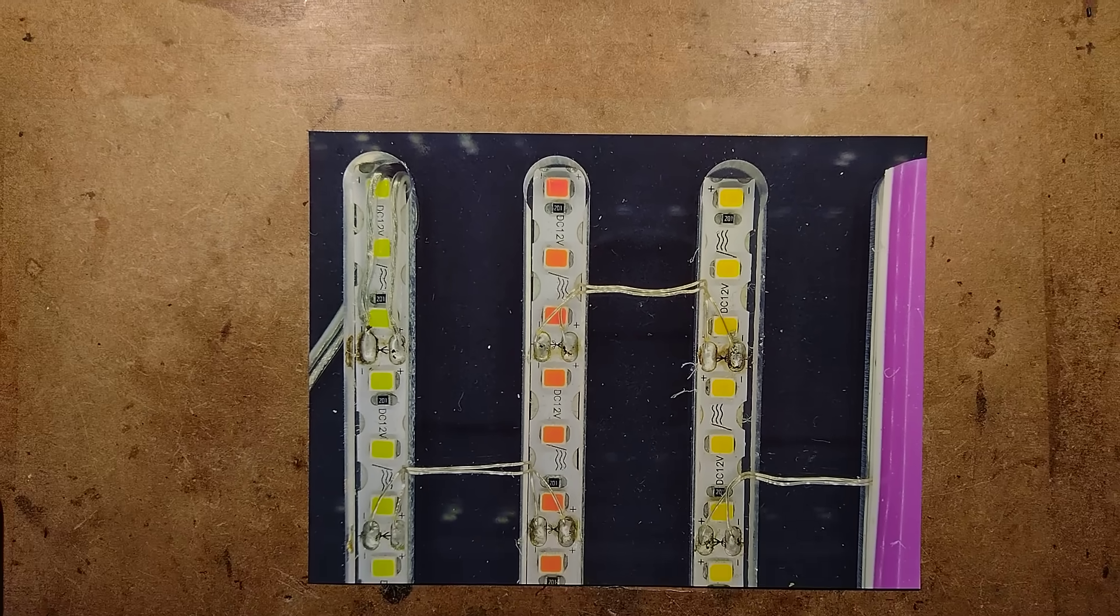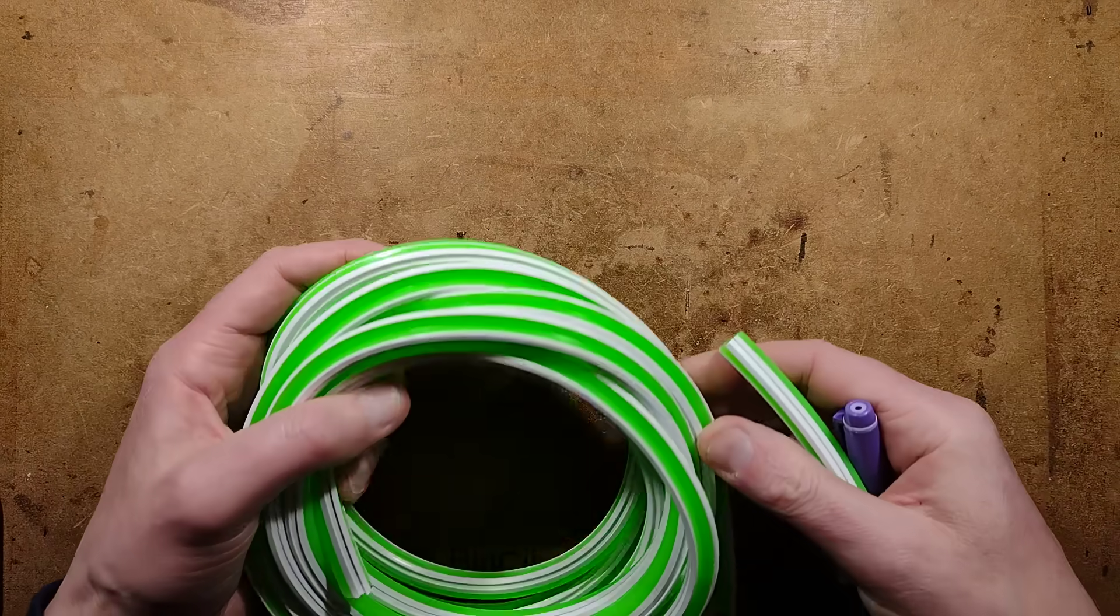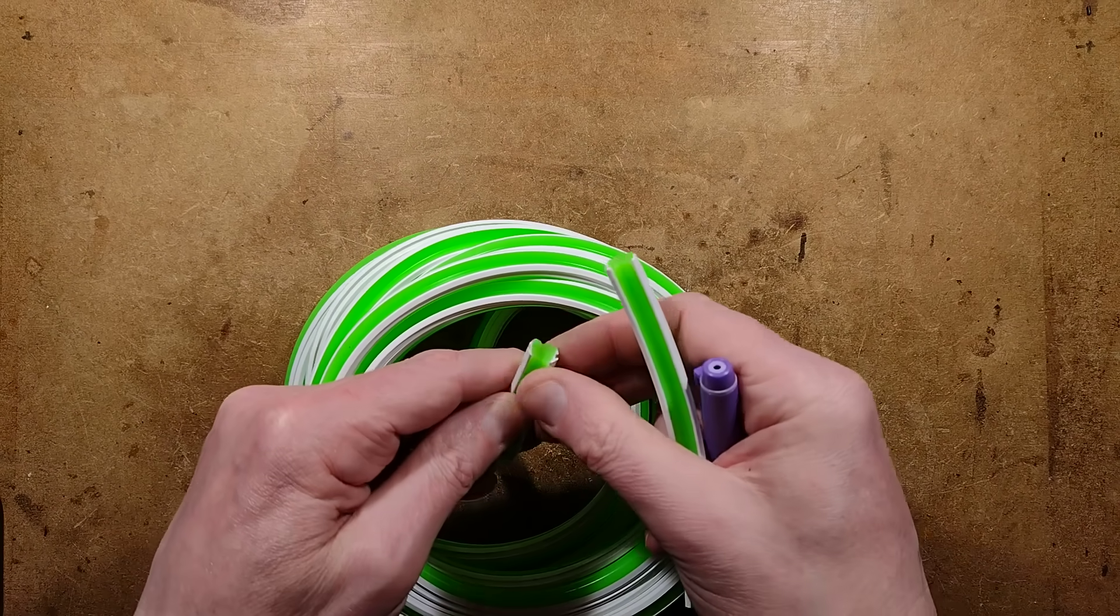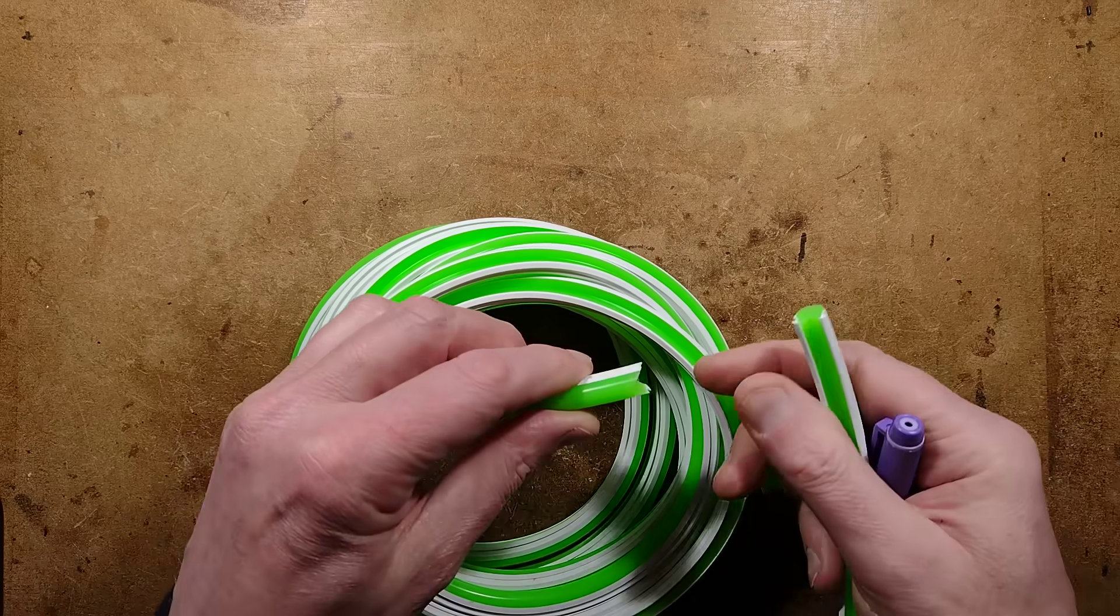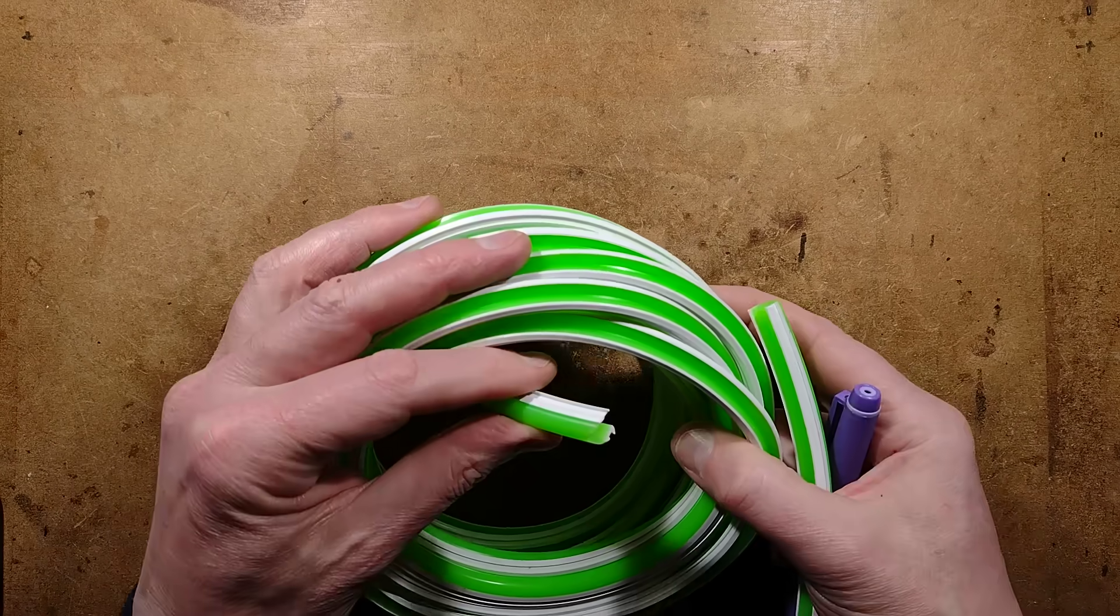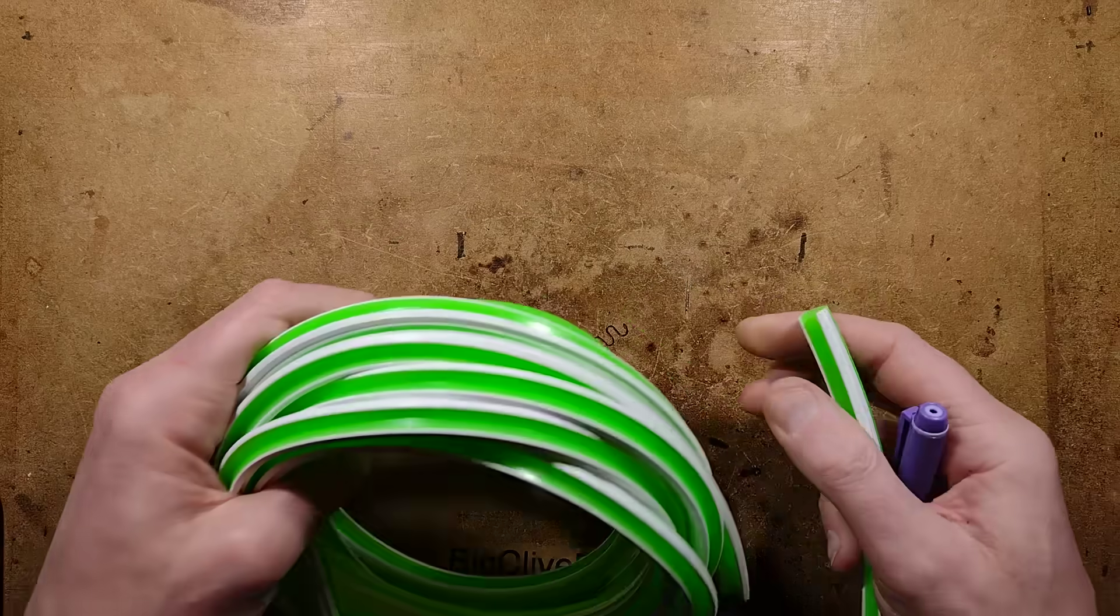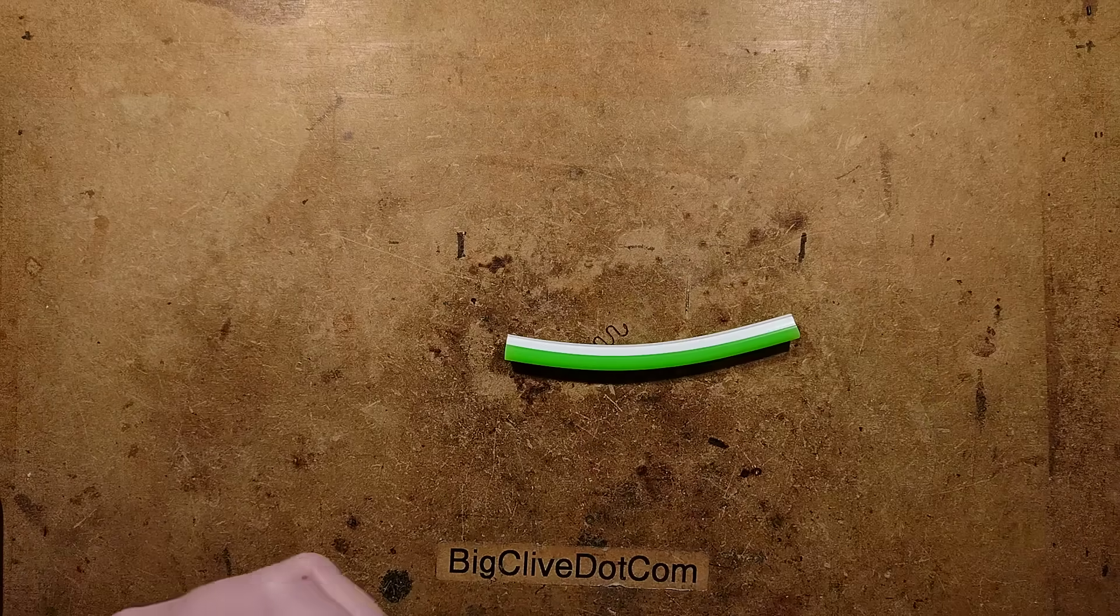So if I put that out of the way and I bring in the exhibit, this is a thicker version. You get it in different widths. I went for the bigger ones for some experiments, but you get it in big rolls about five meters or more and it's easy to cut with a sharp knife.